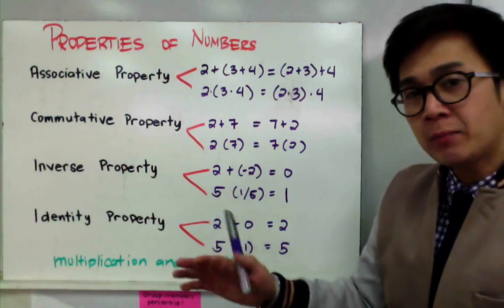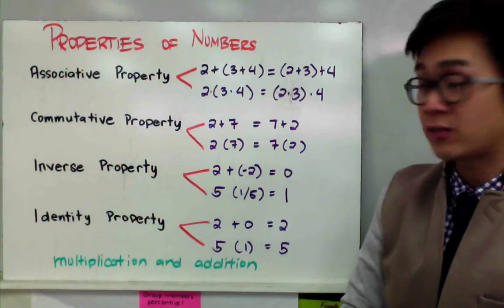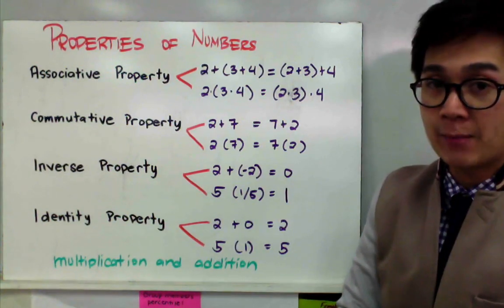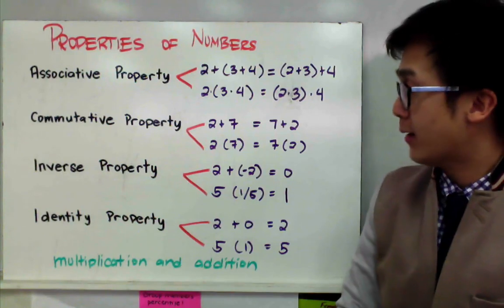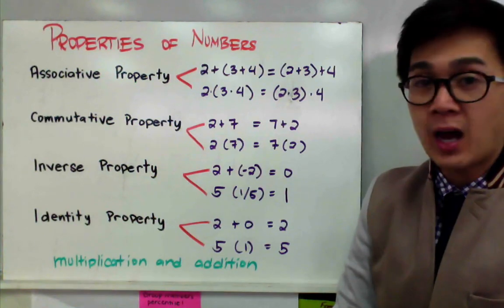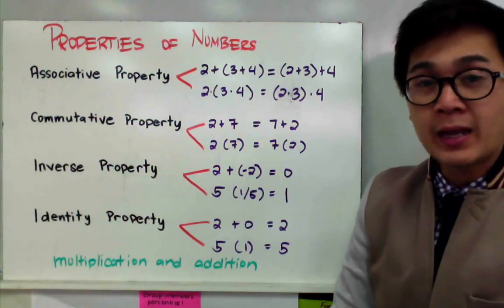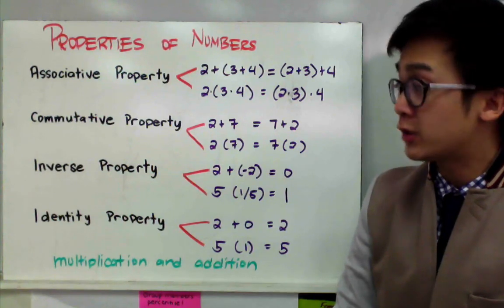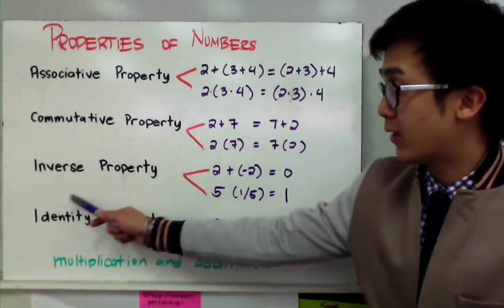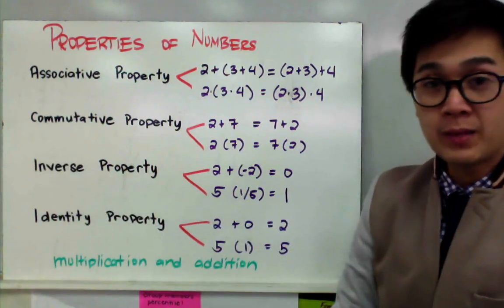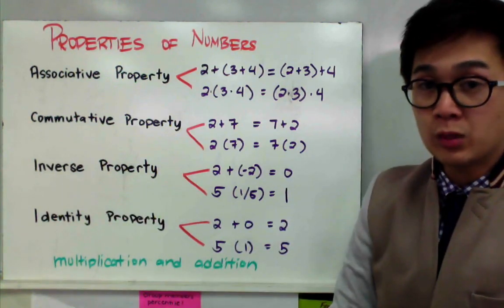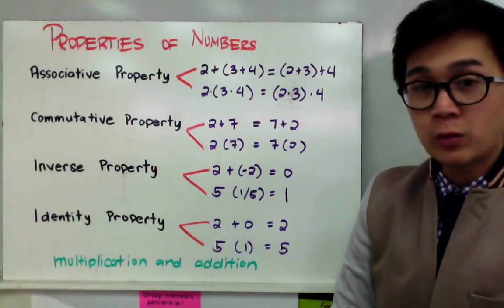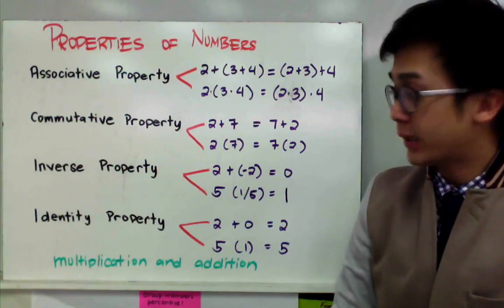It might be a little abstract for most of you, but you will understand it better with our examples later on. So let's say I have nine and I'm thinking of a number to add to nine for it to be equal to zero — that number will be negative nine. What I'm doing right there is the inverse property.